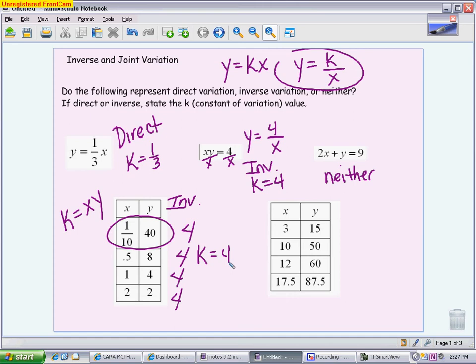For the second one, what I notice is if I look at the x column, the x's are getting bigger, the y's are also getting bigger. So I'm thinking that this has the best chance of being direct variation. To see if it's direct variation, if I go to this equation and I get k by itself, k should always equal y divided by x. So what that means is if you take the y coordinate and divide by the x coordinate, if you're constantly getting that same value, then it is direct variation, and that k value is the number we keep getting. So if I take y divided by x in the first one, I get 5. If I take 50 divided by 10, I get 5. If I take 60 divided by 12, I get 5. 87.5 divided by 17.5, I get 5. So this is direct variation, and my k value is 5.